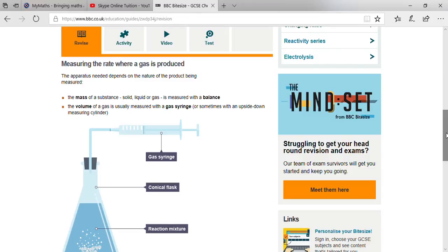The topic is measuring the rate where a gas is produced. This type of apparatus needed is totally dependent upon the nature of the product being measured. Two important things that you have to keep in your mind: